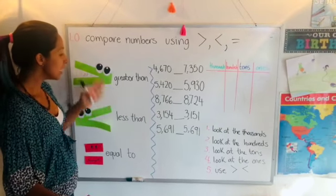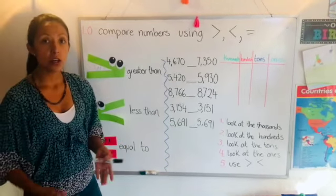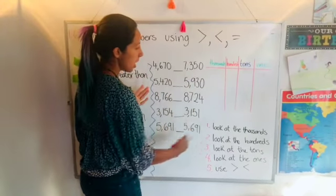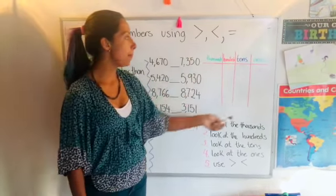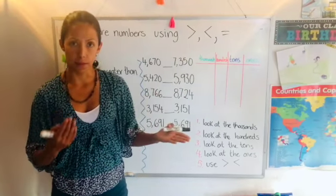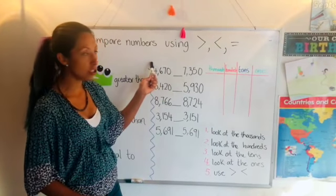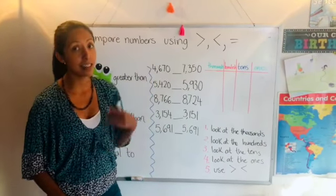So what are these symbols for? To compare numbers. I have some numbers here and I want you to use the place value chart to compare them because we will always have to focus on the first digit, in this case is thousands.